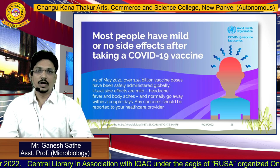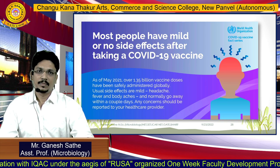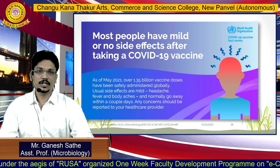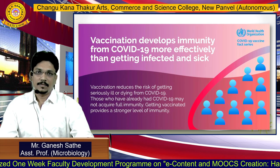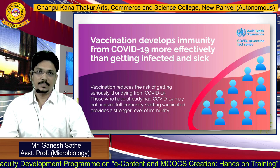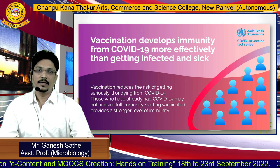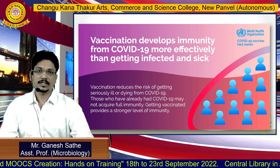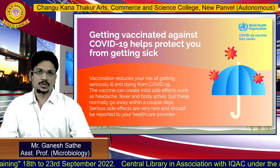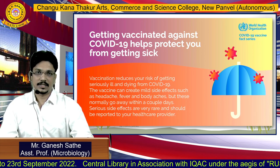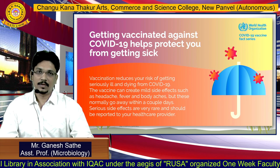Most people have mild or no side effects after taking the COVID-19 vaccine. On this planet there are approximately 700 billion people and the immunity of each individual is different, so side effects may or may not occur. Can vaccination develop immunity from COVID-19 more effectively than getting infected and sick? Yes, because vaccination reduces the risk of getting serious illness. Getting vaccinated against COVID-19 helps to protect you from getting sick. Please do get vaccinated and protect yourself from COVID-19 infections.